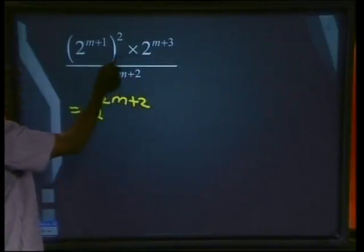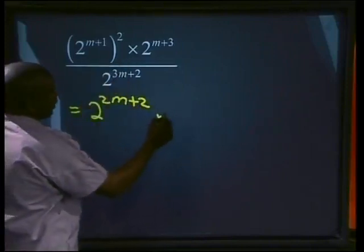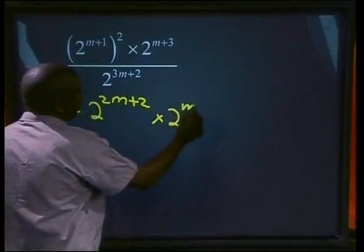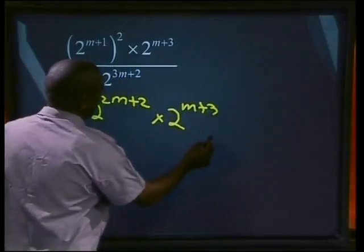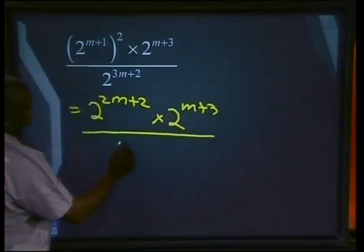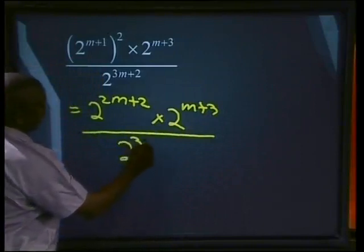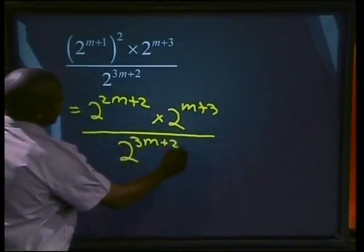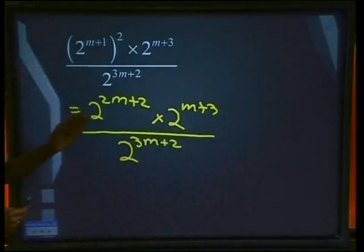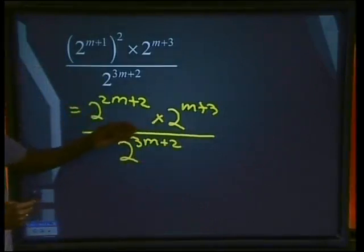Then we have a multiplication. That means we multiply 2 to the power m plus 3 divided by 2 to the power 3m plus 2. Now let's look at this. All the bases are the same.